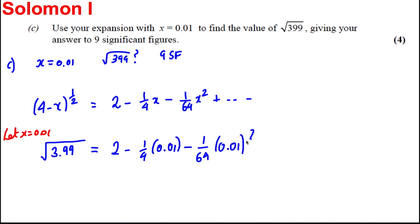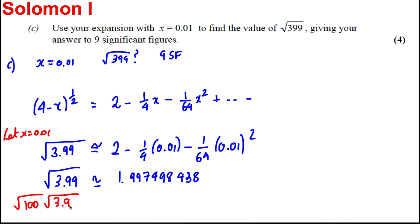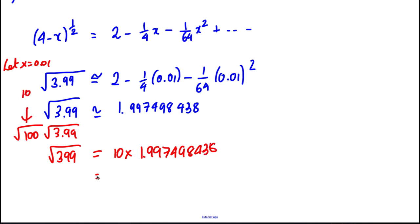This is approximate because we haven't continued the expansion forever. Working that out, the square root of 3.99 is approximately 1.997498438. Now, if we multiply both sides by the square root of 100, which equals 10, on the left side we get the square root of 399 by the laws of surds, and on the right side we get 10 times 1.997498438.